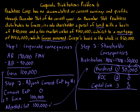Another part of the shareholder consequences: Grape is receiving land, so what basis does Grape take in that land? The rule under Section 301(d) is that it's always going to equal the fair market value. The fair market value here is $190,000, so that is the adjusted basis of the land in Grape's hands. We've now determined that the $50,000 distribution is taxed as a dividend, and we've determined the basis of the land going forward for Grape.